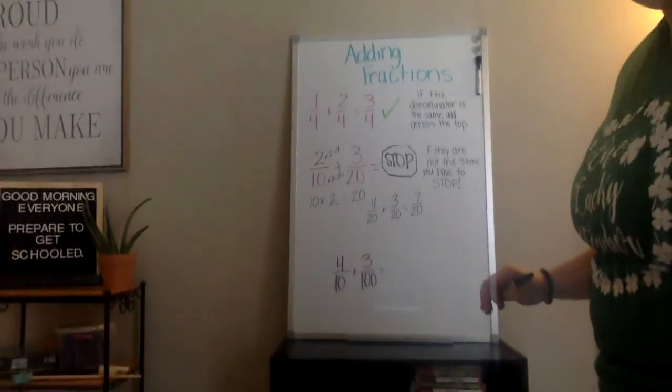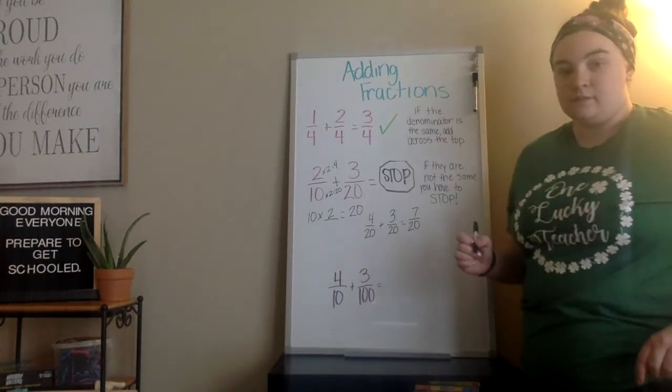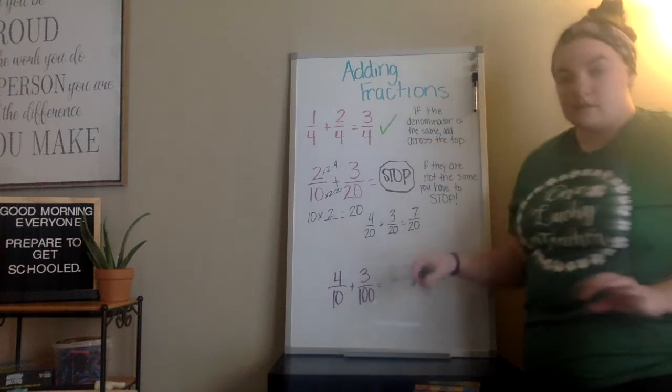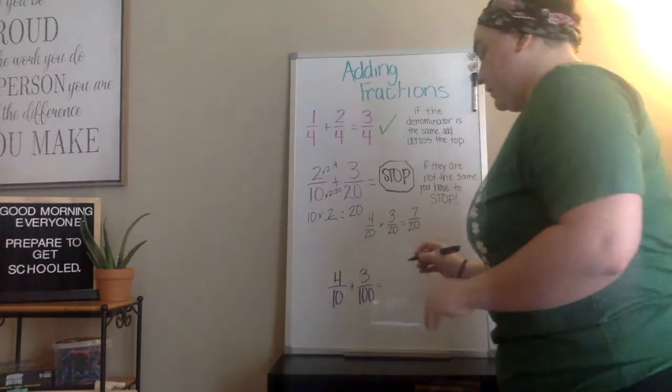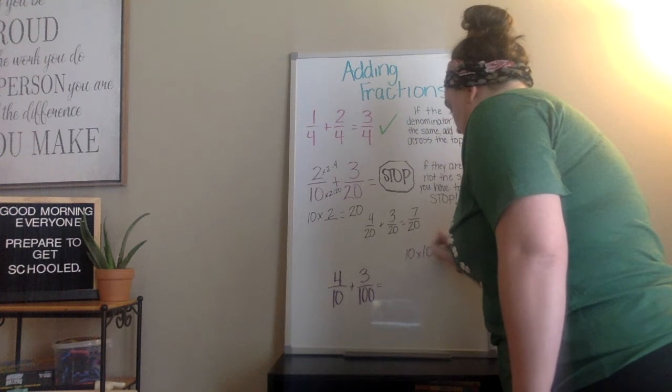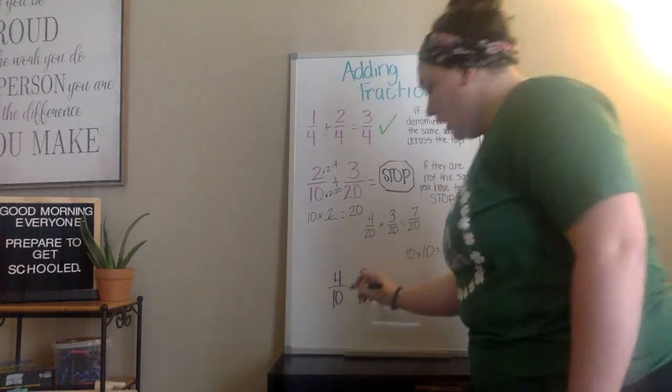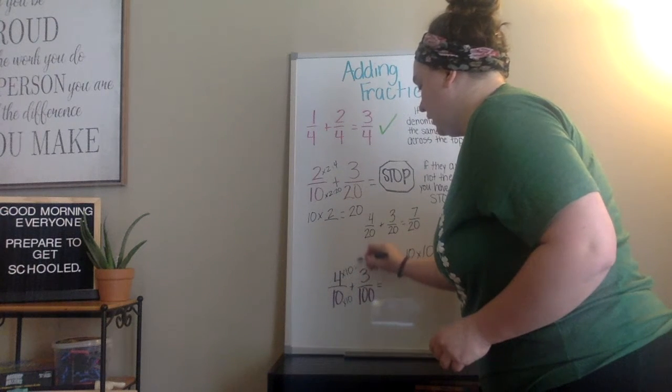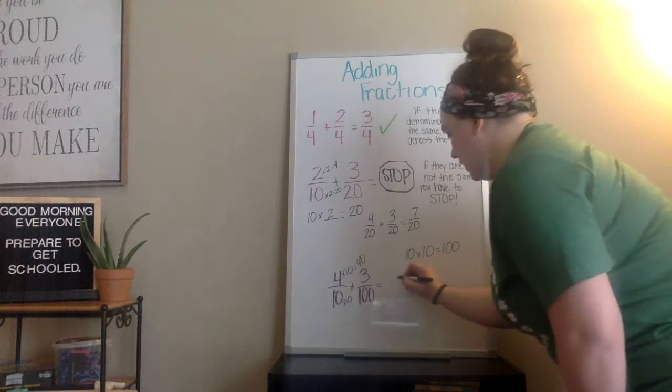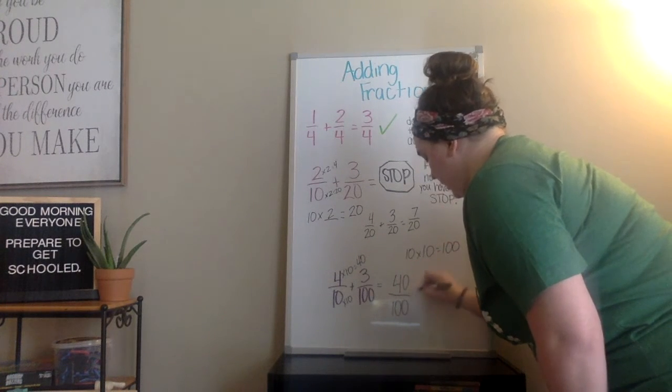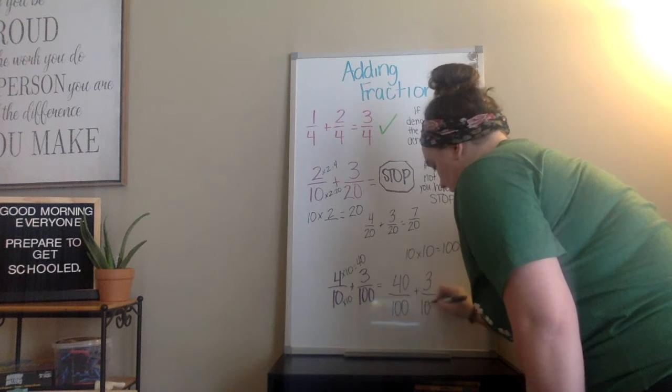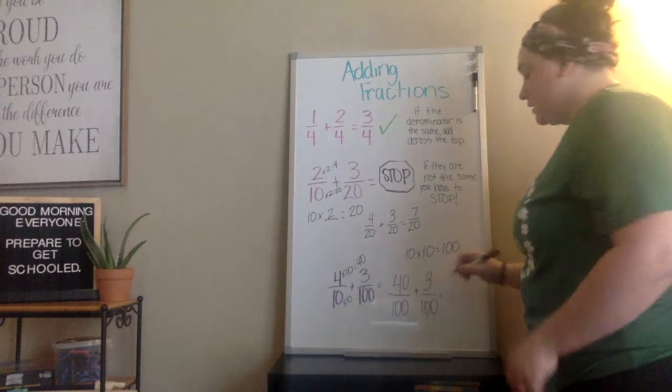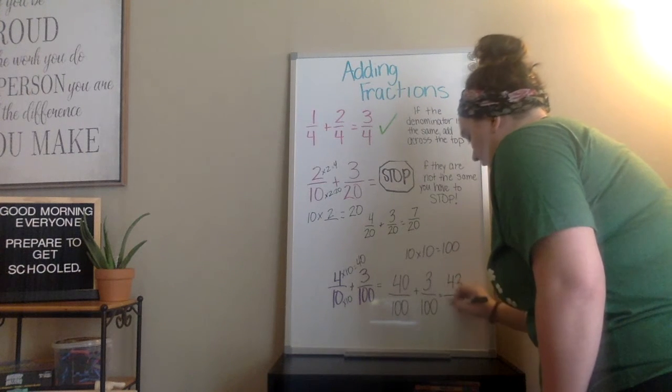So here's a problem you're going to see on your review paper. 4 tenths plus 3 hundredths. It wouldn't make much sense for us to change the 3 hundredths. So we have to change the 4 tenths. 10 times something has to equal 100. That's another super quick fact. If I think 10 times 10 equals 100, I should have a common denominator of 100. Whatever I do to the bottom, I have to do to the top. 4 times 10 equals 40. So now I should have 40 over 100 plus 3 hundredths. Once I have a common denominator, I can add across the top and I'm good to go. So 40 plus 3 is 43 over 100.